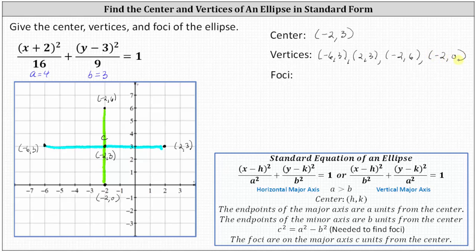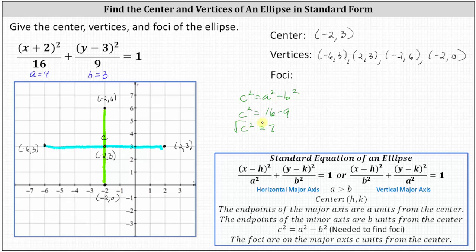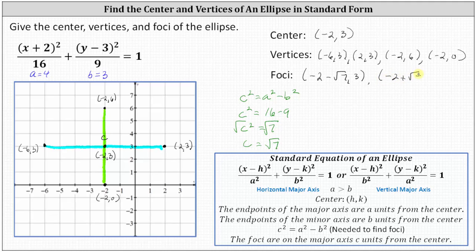Before we find the foci, we need to find c because the foci are c units from the center. Because they're on the major axis, we add and subtract c to the x-coordinate of the center. Using the equation c squared equals a squared minus b squared, we have c squared equals 16 minus nine, which gives us c squared equals seven. Taking the principal square root of both sides, c equals square root of seven. So the left focus is negative two minus square root of seven comma three, and the right focus is negative two plus square root of seven comma three.